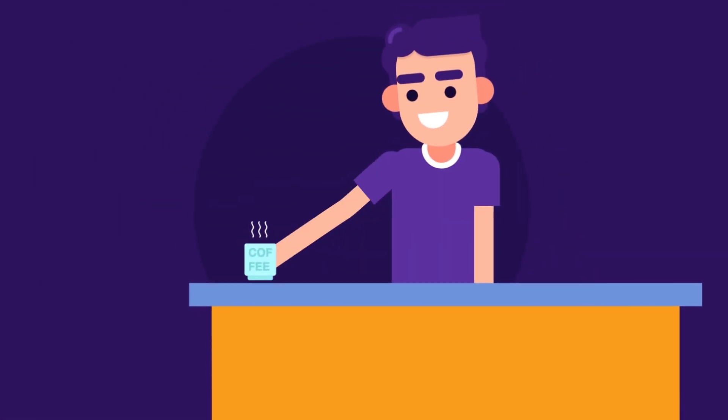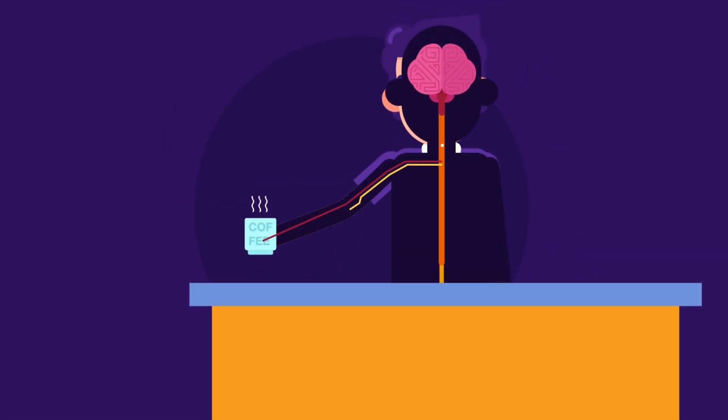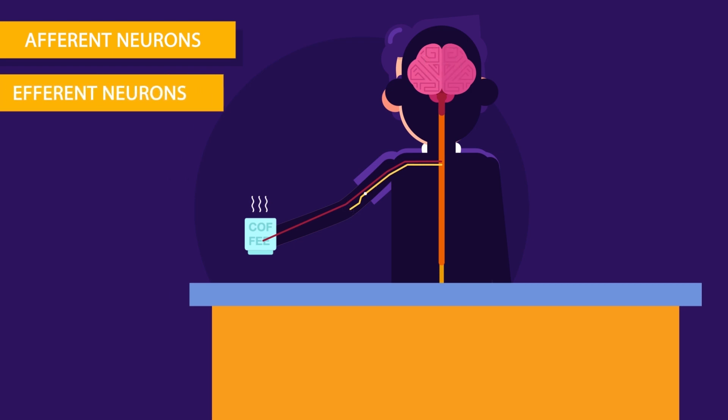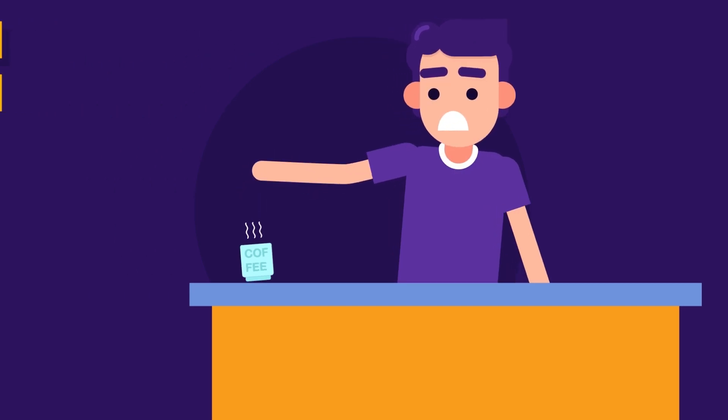When you hold a hot cup of coffee, sensory neurons in your hand transmit signal to brain through sensory neurons, also called afferent neurons, that the cup is hot. Your brain process that information and send response through motor neurons, known as efferent neurons, that you must put that cup back.